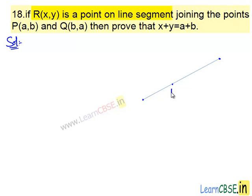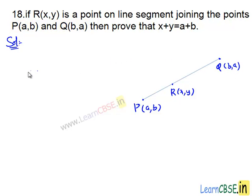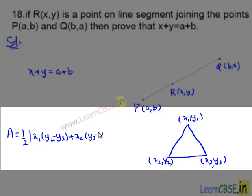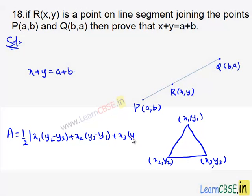Given that R is a point on the line segment joining the points P and Q, we need to prove that X plus Y equals A plus B. We know that the area of a triangle formed by the points (X1, Y1), (X2, Y2), and (X3, Y3) is given by: A equals half of the modulus of X1 times (Y2 minus Y3) plus X2 times (Y3 minus Y1) plus X3 times (Y1 minus Y2).